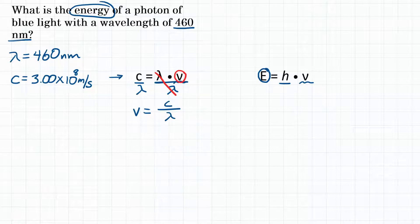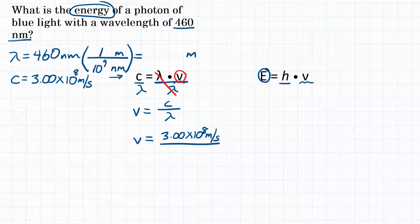Frequency equals C, the speed of light, 3.00 times 10 to the 8th meters per second, over wavelength. Now our wavelength is in nanometers, and we need that to be in meters so our units cancel out. We're going to multiply 460 nanometers by a conversion factor to get to meters. For our conversion factor, we will want nanometers on the bottom and meters on top. The relationship between those two units is 1 meter is 10 to the 9th nanometers.